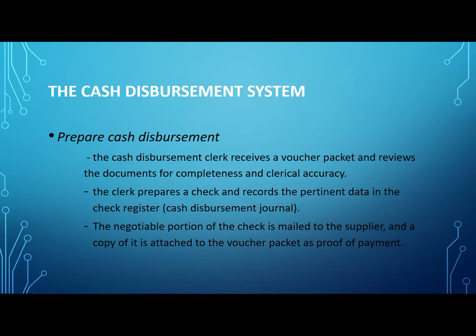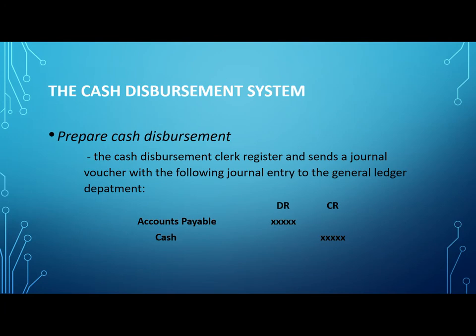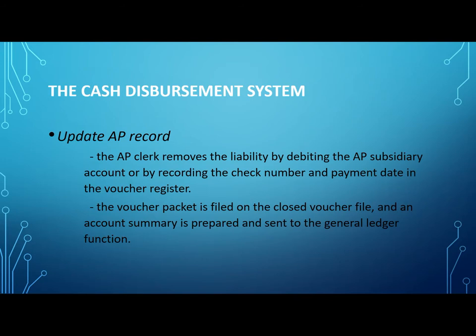The clerk marks the documents in the voucher packets paid and returns them to the AP clerk. The cash disbursement clerk sends a journal voucher with the following journal entry to the general ledger department: debit accounts payable and credit cash. This is done before it will be posted on the general ledger. The AP clerk removes the liability by debiting the AP subsidiary account or by recording the check number and payment date in the voucher register. The voucher packet is filed in the closed voucher file and an account summary is prepared and sent to the general ledger function.